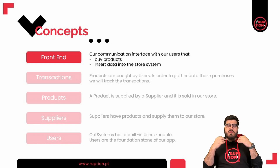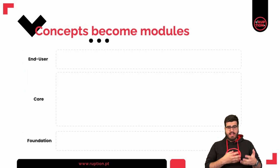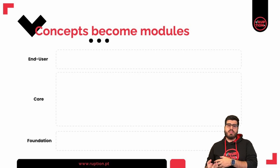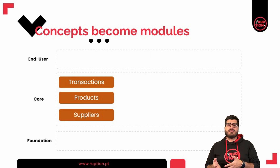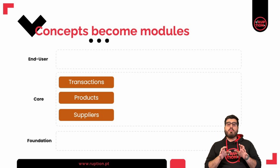Now that we have our concepts lined up, we will need to start organizing them. If you recall our previous videos, we have three main layers: end user, core, and foundation. Product, supplier, and transaction will have data associated to them, so we will need core modules to hold that information. To follow good architecture practices, we will build each data model in a different module. This will allow our concepts to be split and prepare the app for the future in case we want to grow our business and add more features. Those core modules will hold the data model we have been building throughout the series.